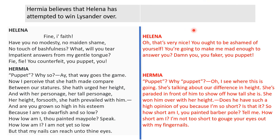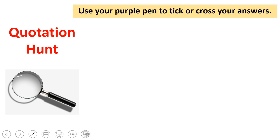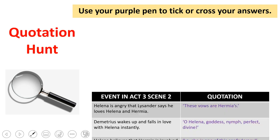Okay, if you're back that means you've got the quote written in here and now we are ready to make our corrections. So grab your purple pen and let's tick our answers if you've got them right. You might have chosen a slightly different quote to the one I have written down, but I recommend that you write the purple pen correction anyway. So number one: 'These vows are Hermia's' — we did that together. Number two: 'Oh Helena, goddess, nymph, perfect, divine.' Number three: 'Lo, she is one of this confederacy.' Number four: 'If thou say so, withdraw and prove it too.' Number five: 'Why are you grown so rude? What change is this, sweet love?' And the final one: 'Her height, forsooth, she hath prevailed with him.' If you haven't got all of these quotes written down, can you make sure that you add any that you are missing in purple pen now please? Pause the video and make your purple pen corrections.